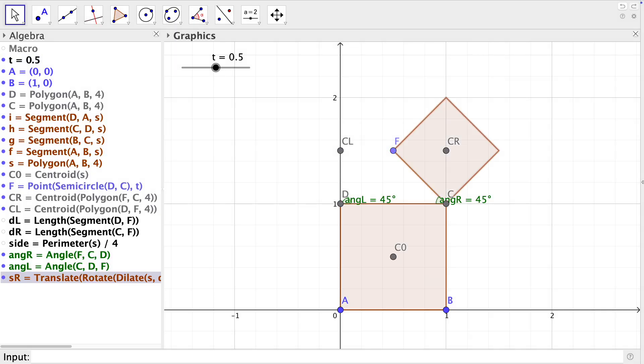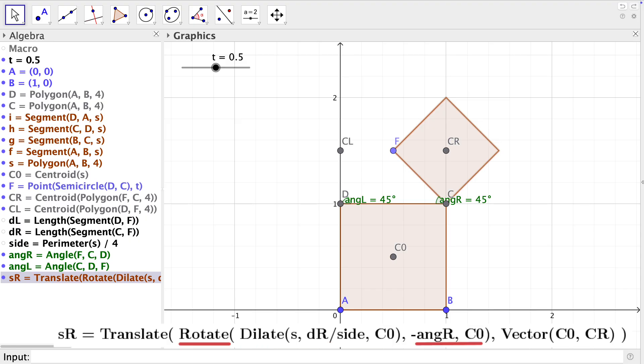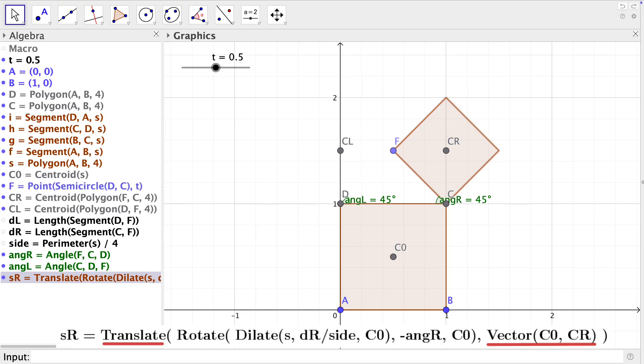Here now we can use the commands translation, rotation and dilate. Define the square on the right side as SR. This is obtained first by dilation with respect of the centroid C0 with dilation factor DR divided by side. Second, we applied a rotation with respect to the centroid C0 and the negative angle on the right side. Third, we applied the translation from the centroid C0 to the centroid CR on the right side.